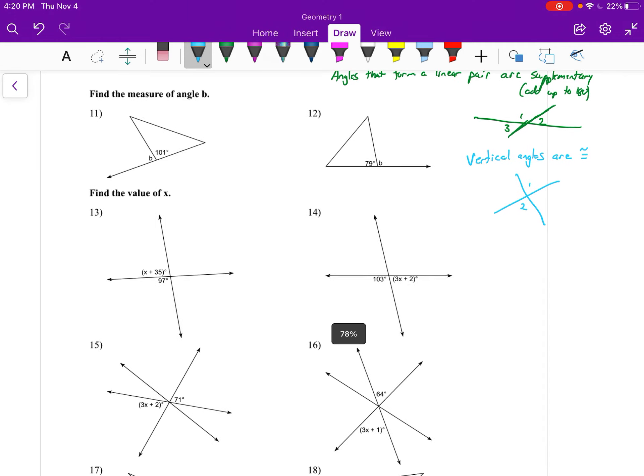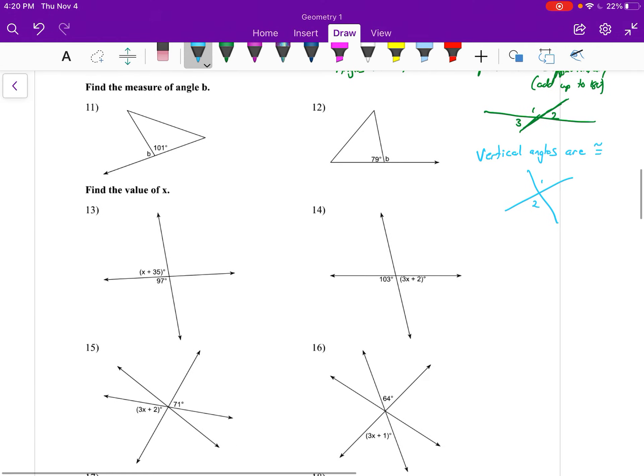Those really are the concepts that we'll use on this back page. In number 11 we see that this forms a linear pair, so we know—and you don't really have to write this equation out—but we know that b plus 101 has to equal 180 because they are supplementary, they add up to 180.